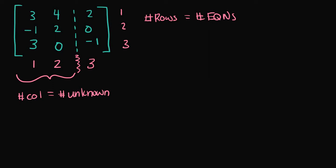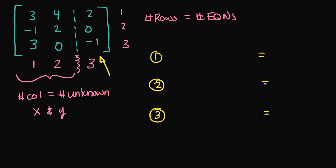We can choose any set of characters to represent the unknown variables. I'll choose x and y. Since we know we have 3 equations, I'll write the equation numbers here: 1, 2, and 3. And since this is an augmented matrix, this column represents all the constants on the right-hand side of each one of these 3 equations. So, the right-hand side for equation 1 is going to be 2, which corresponds to this number right here in the matrix. The right-hand side for the second equation is going to be 0.